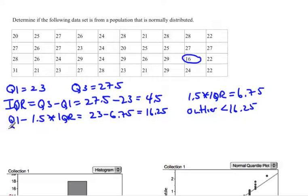Another definition of outlier is Q3 plus 1.5 times the interquartile range. That would be 27.5 plus 6.75, which equals 34.25.